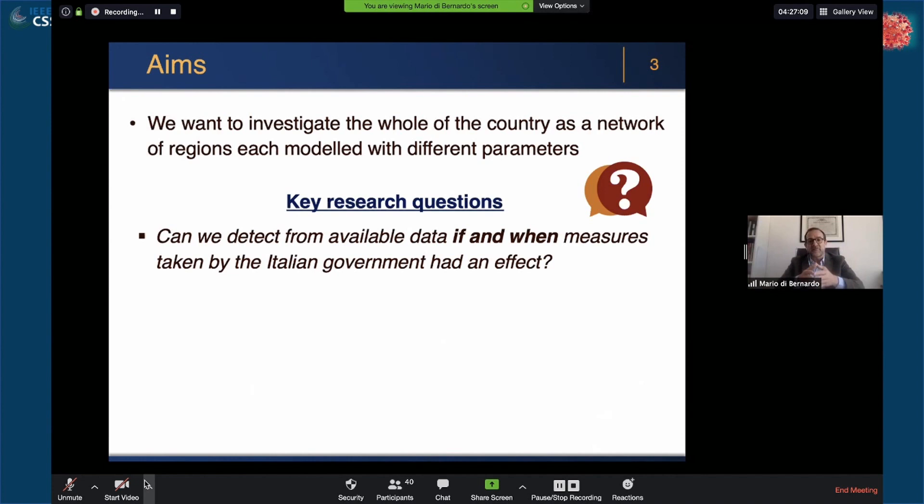First, can we detect from the available data if and when measures taken by the Italian government had an effect? And were there differences in the regional implementation or regional effects of these measures? Secondly, what is the effect of regional heterogeneity and how it can play a role?